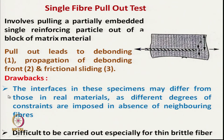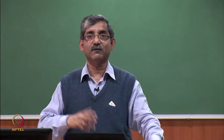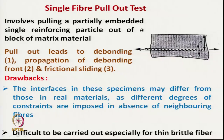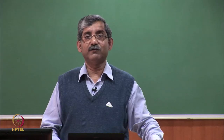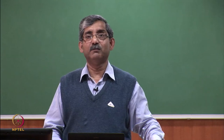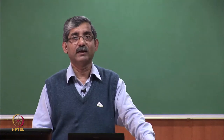Drawbacks of the single fiber pull-out method include that the interface conditions may differ from real composite material, since neighboring fibers are absent. In actual composites, there are many other fibers, matrix coverage may not be 100%, and manufacturing technique differences exist. This technique gives only a rough idea, and it is difficult to use with thin brittle fibers.